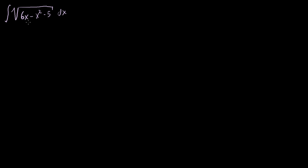Let's say we have the indefinite integral of the square root of 6x minus x squared minus 5. Obviously this is not a simple integral. I don't have just this expression and its derivative lying around, so u-substitution won't work. You can guess from the title of this video that we're going to have to do something fancier — we'll probably have to do some type of trig substitution. I like to do trig substitution when I see something like 1 minus x squared, or x squared minus 1, or x squared plus 1 under a radical sign. These are the types of things that get my brain thinking in terms of trig substitution.